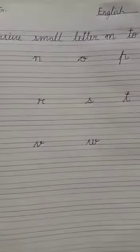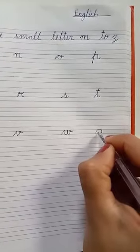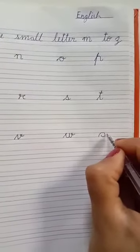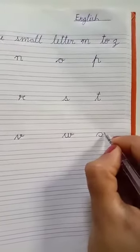This is W. Next is X. X starts from the third line, with a curve on the third line. Again we start on the second line with a curve and turn it, touching the way to the line.